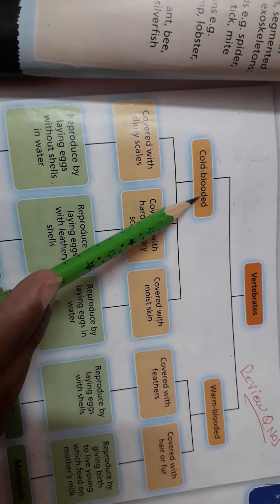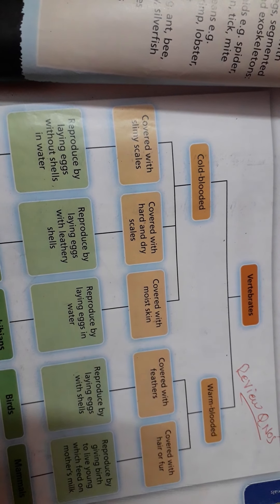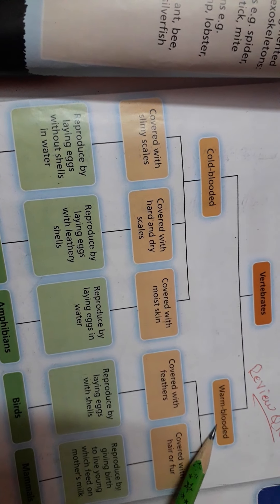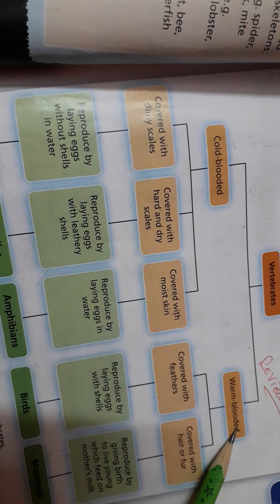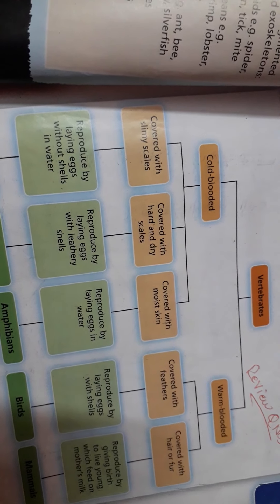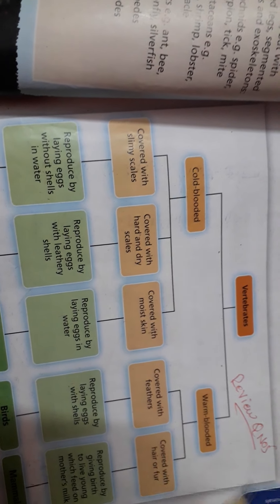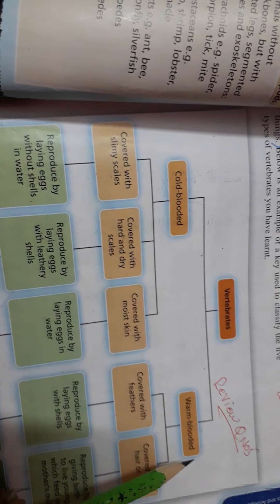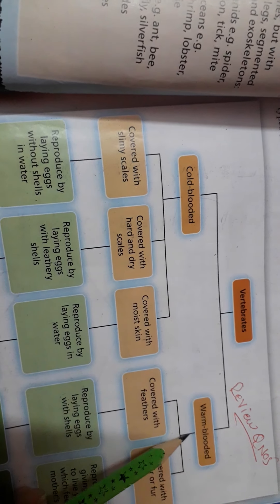Cold-blooded animals are those whose body temperature changes according to the environment — the body temperature is not constant. Warm-blooded animals have a constant body temperature that doesn't change according to the environment. So the main difference between vertebrates is whether they are cold-blooded or warm-blooded. To make the key, first write the name of the group 'vertebrates,' then identify the two main features which differ: cold-blooded and warm-blooded.